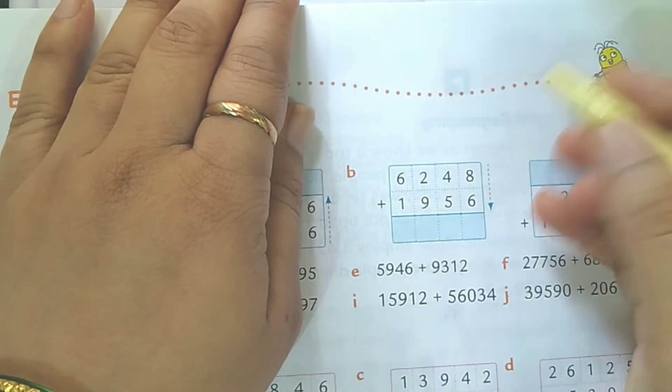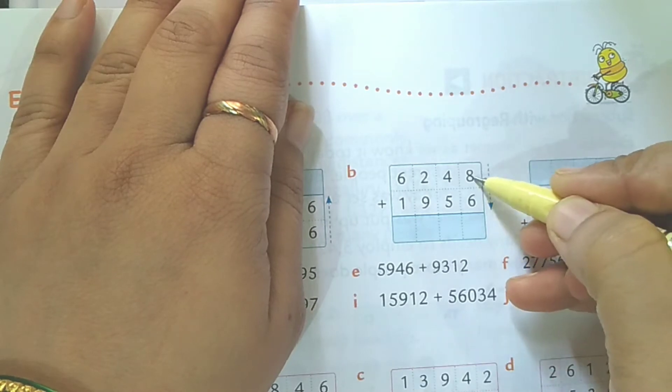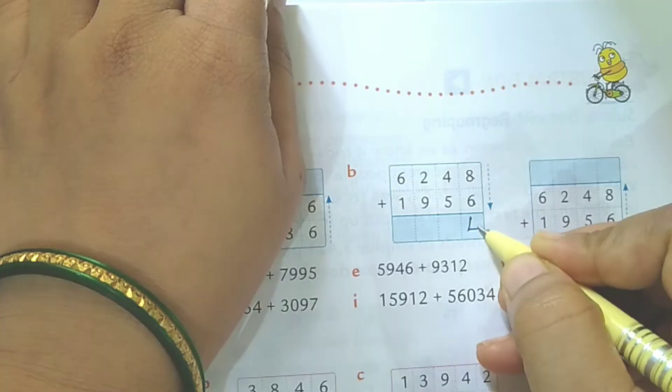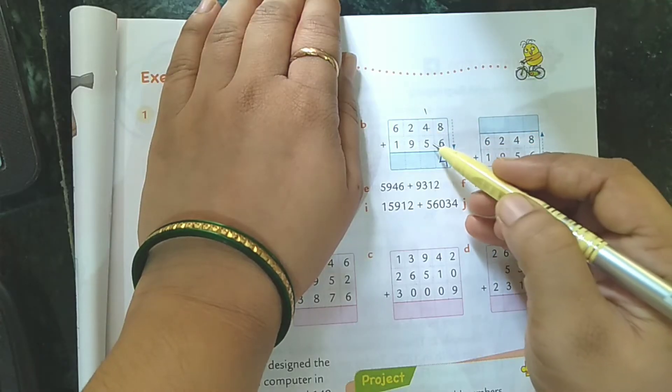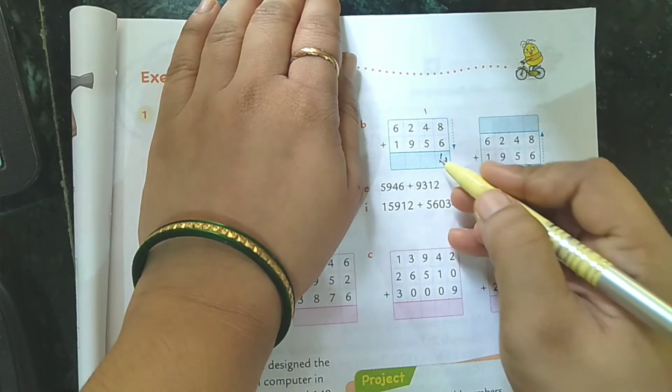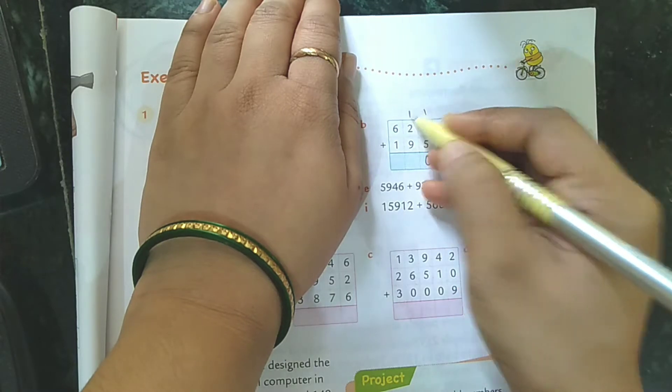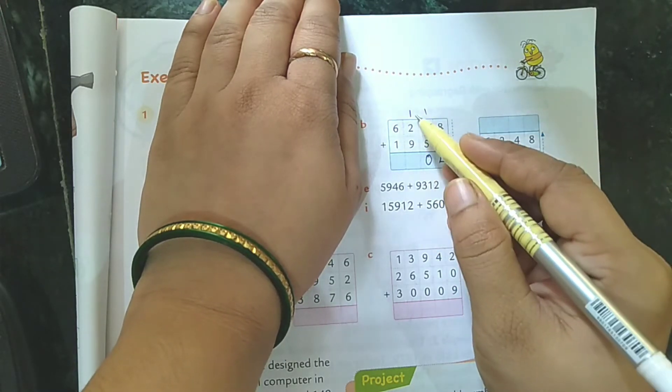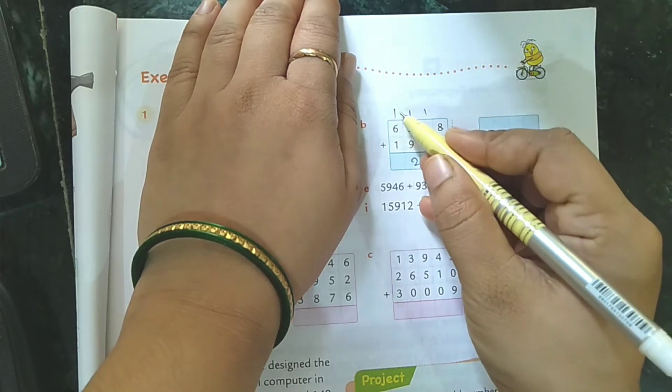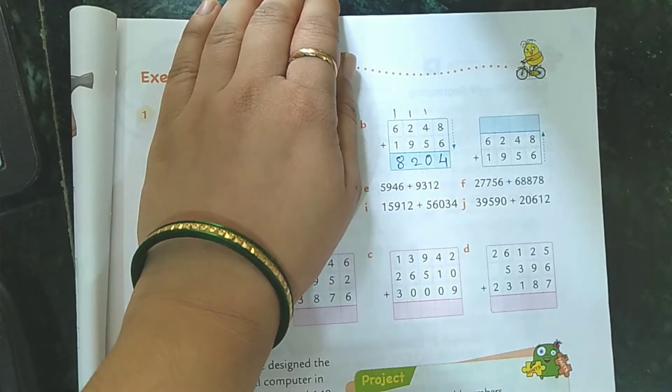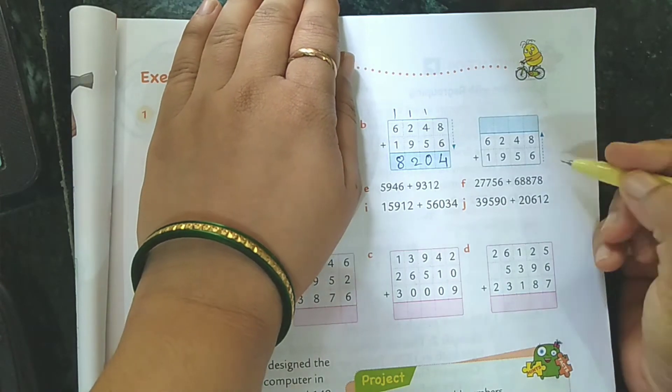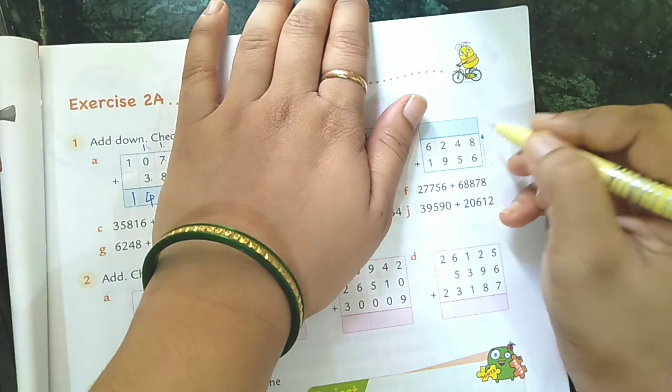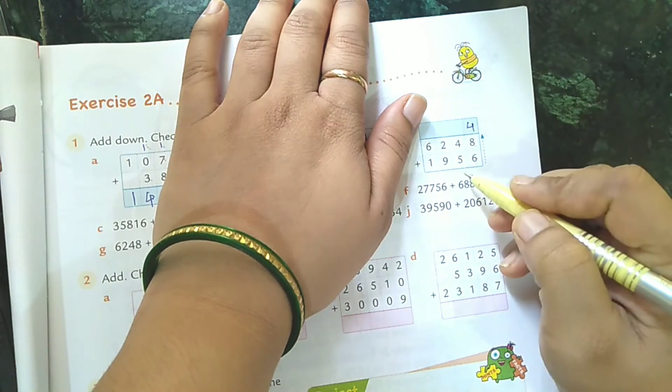We'll solve question number B. Add down means 8 plus 6, so 8 plus 6 is 14, 1 carry, 4 plus 5 is 9, 9 plus 1 is 10, 0, 1 carry, 2 plus 9 again 11, 11 plus 1 is 12, 2, 1 carry, 6 plus 1 is 7, plus 1 is 8. Now add up: 6 plus 8, same 14, so 4 and 1.